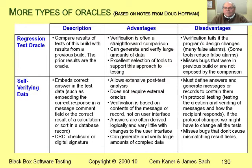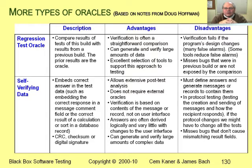Regression test oracles are very common, and some people use these as the basis for all of their test automation. But I keep meeting people who tell me that 90% or more of the mismatches between the current version's output and the regression test output were not bugs at all — and that most of their test time is spent updating these old tests over and over as the program changes.